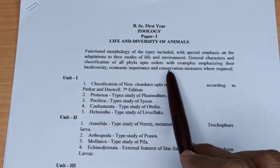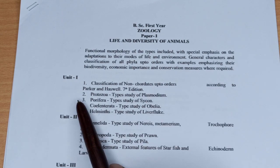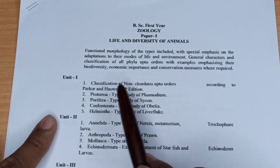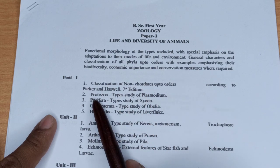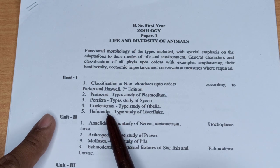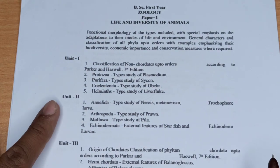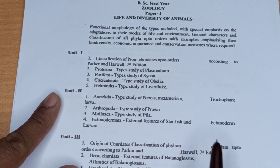Unit 1 में classification of non-chordates up to order: Protozoa phylum, Porifera, Coelenterata और Helminth के बारे में पढ़ेंगे। Economic importance and conservation measures भी हैं। Unit 2 में Phylum Annelida, Arthropoda, Mollusca और Echinodermata हैं।